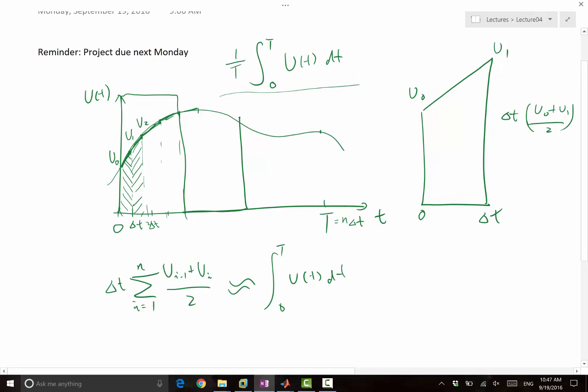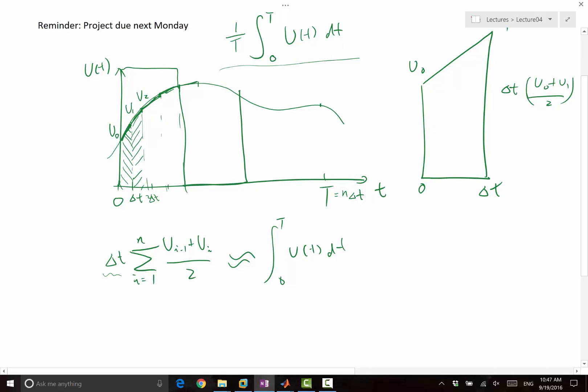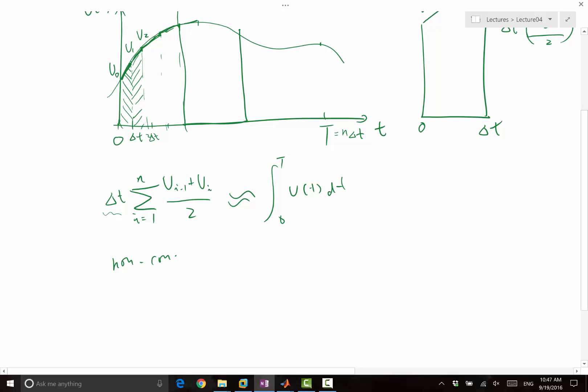And also, it also allows you to do non-uniform spacing in time. For example, if you use ODE45 to integrate your ODE, ODE45 is going to return you an array of time steps, time points, right? And there is no guarantee it will return you a uniform array of time points. So instead of having a constant delta T, the modification would be summation of i goes from 1 to n of delta Ti times Ui minus 1 plus Ui over 2. So this would be the same integral with non-uniform time steps.